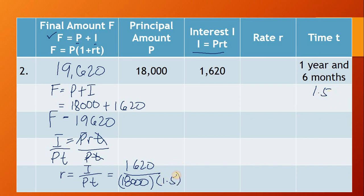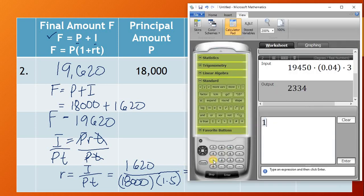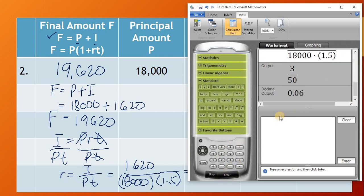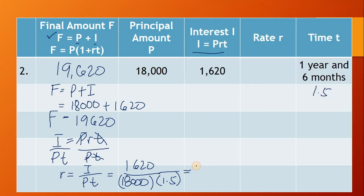The I value is 1,620 divided by the product of the principal 18,000 and the time 1.5 years. Using the calculator: 1,620 divided by (18,000 times 1.5), place it in grouping — 18,000 times 1.5, close parenthesis, hit enter — and this should be 0.06. Converting to percent by moving the decimal two places to the right, this becomes 6%.